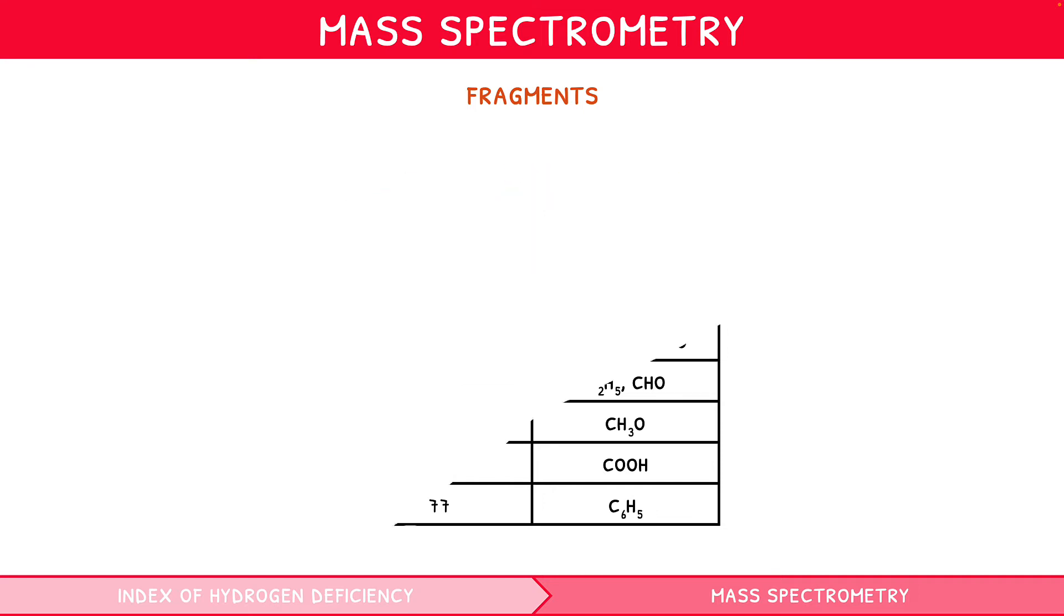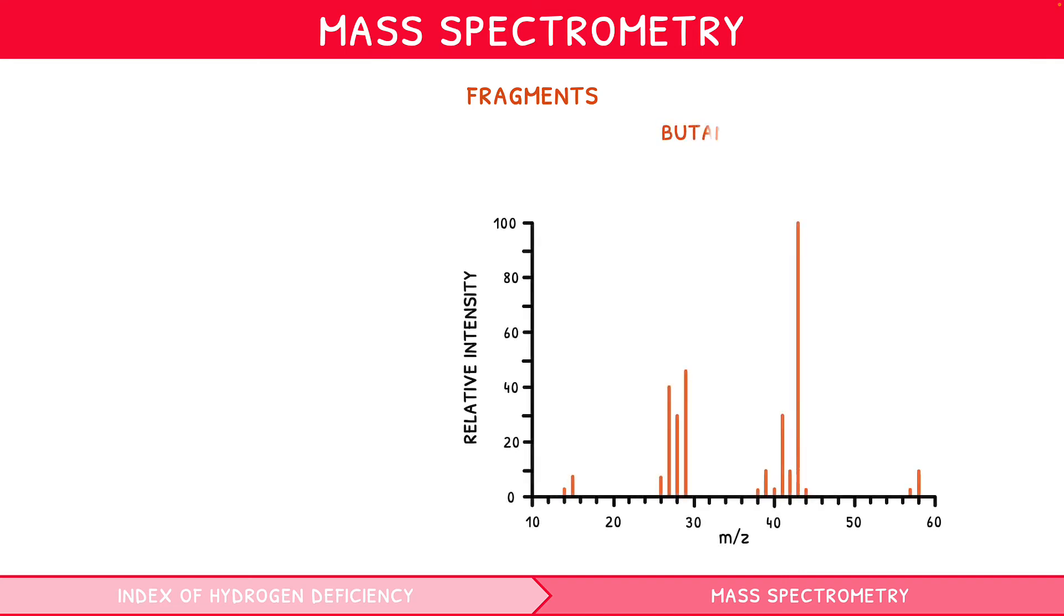Let's talk through an example graph for a known molecule butane, C4H10. First, let's draw the displayed formula for butane to give us a visual reference point. Looking at the graph, we can see the highest, right-most peak, the M plus peak, is 58. This tells us the molecular mass of the species is 58, which is true for butane. This peak therefore represents C4H10 plus.